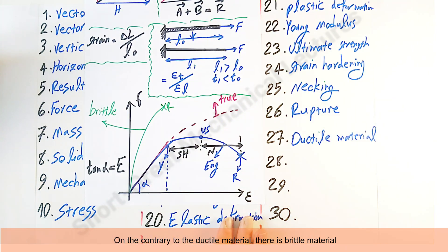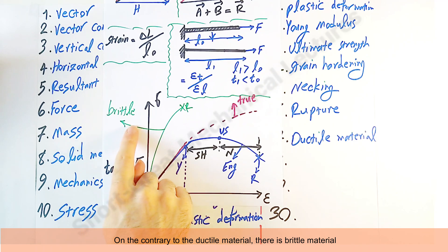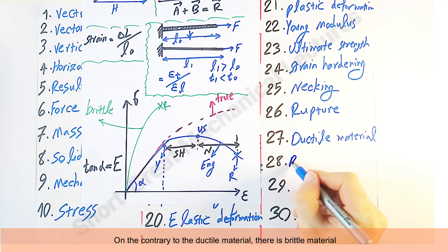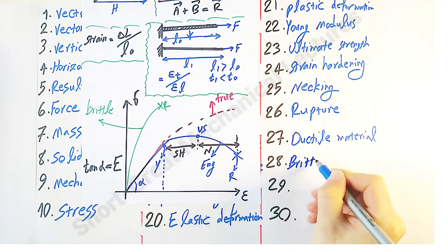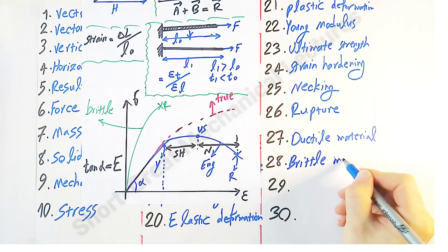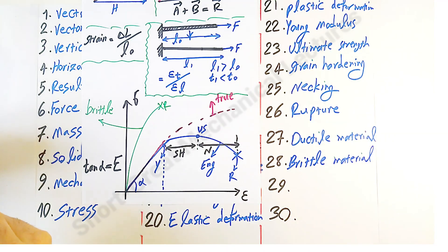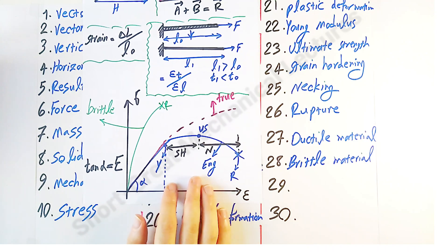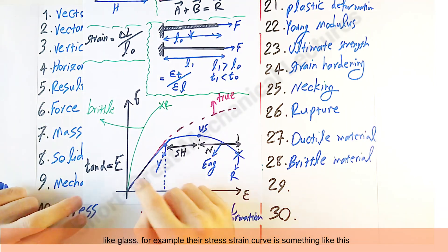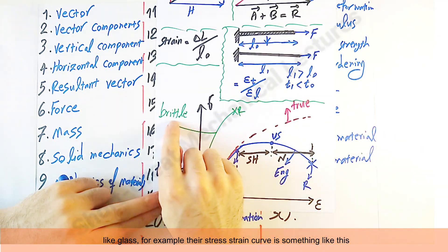On the contrary to the ductile material, there is 'brittle material,' like glass for example. Their stress-strain curve is something like this, schematically of course.